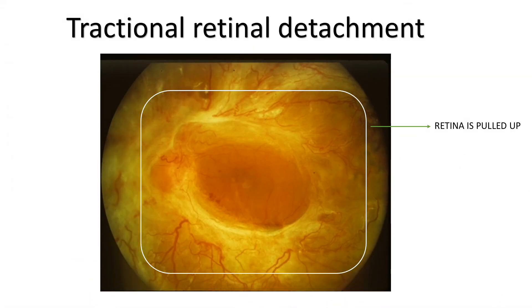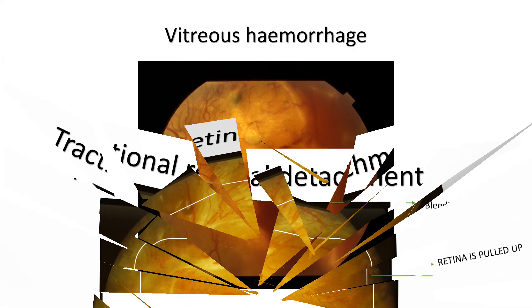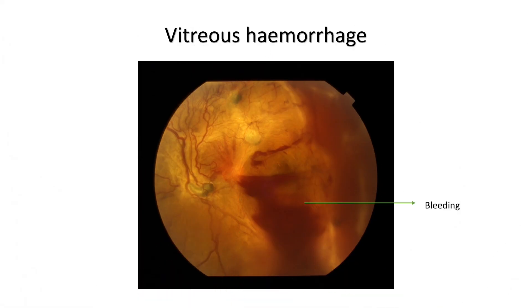Finally, the stage of tractional retinal detachment arises, where the retina is pulled up due to traction caused by these membranes. Vitreous hemorrhage is bleeding within the vitreous cavity. These last two stages require surgery.